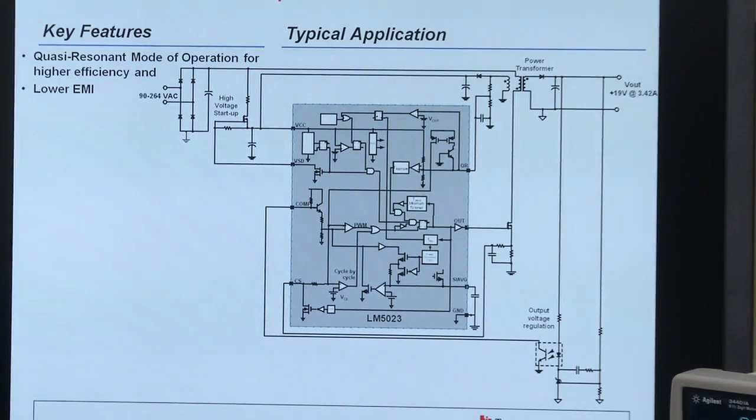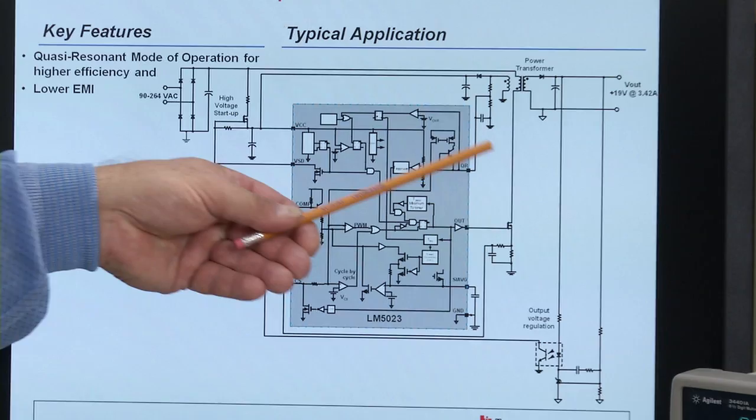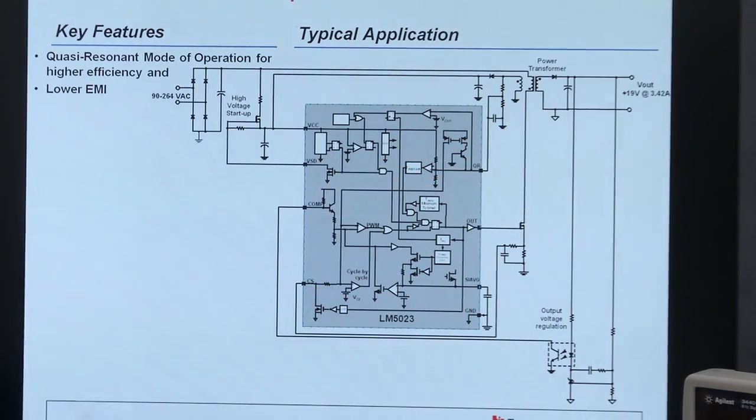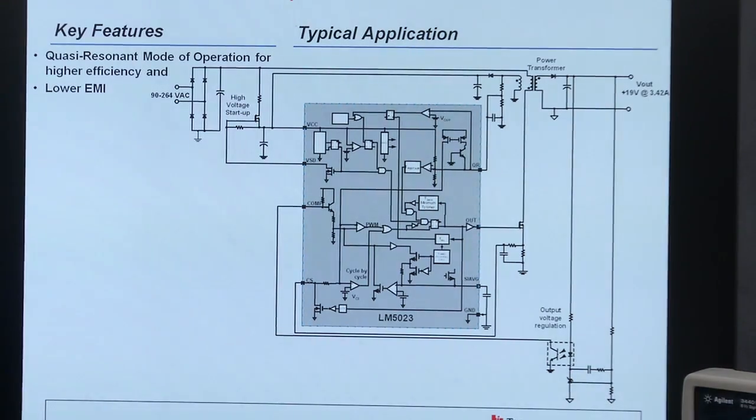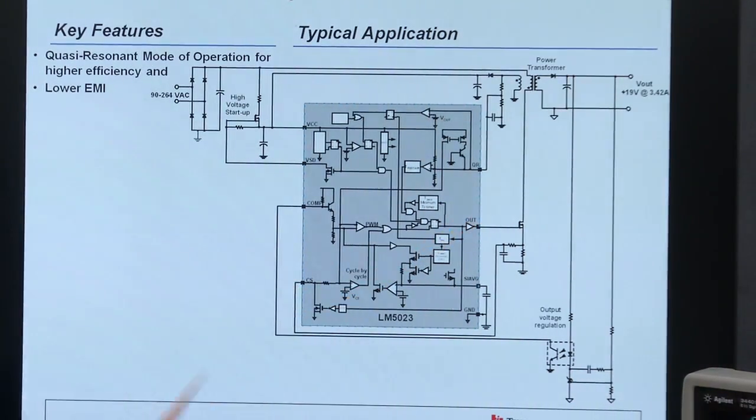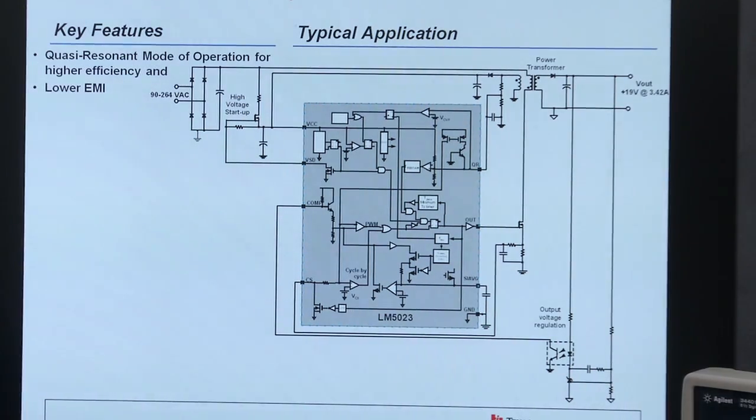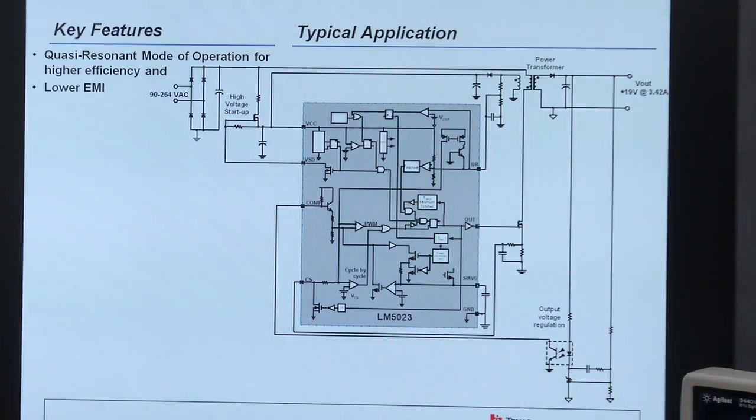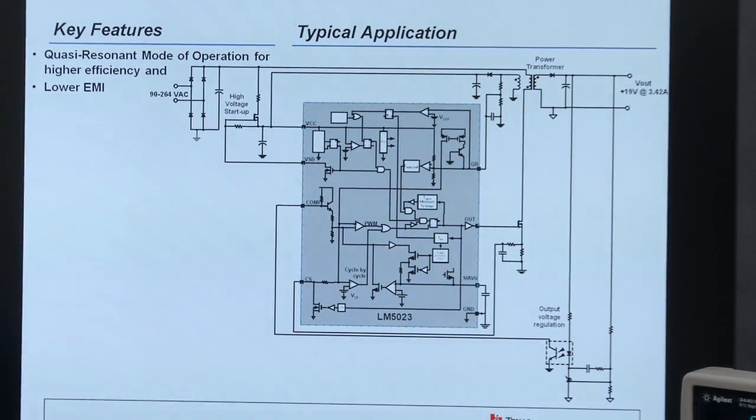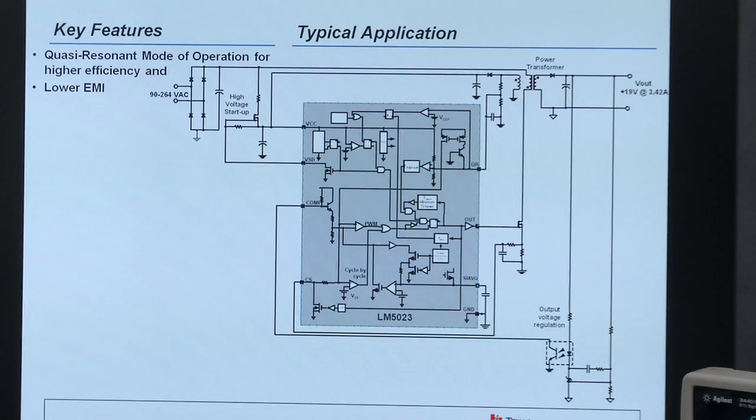What happens with this resonant circuit is once the energy is transferred, this drain voltage is going to ring down towards zero volts. With quasi-resonant mode operation, we would like to turn the switch immediately back on, or as fast as we possibly can. The reason is that if we can switch this FET on at zero volts, we reduce the switching losses in the system, improving the active efficiency.